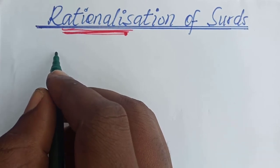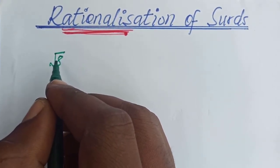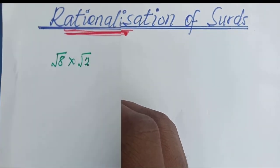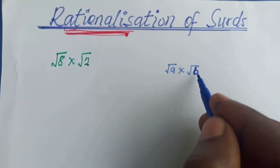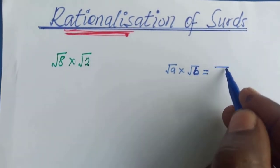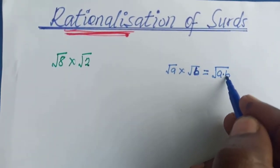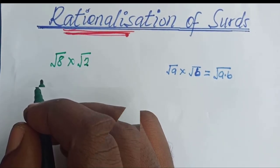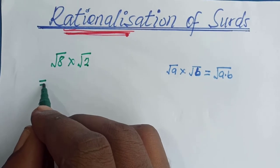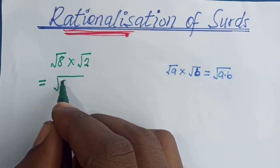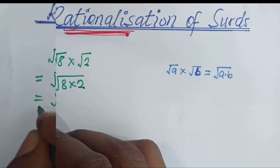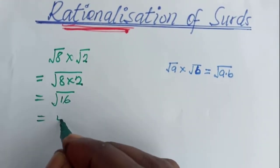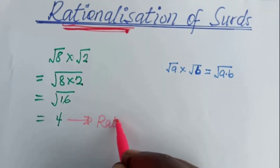Assuming we have the square root of 8 and we multiply it by the square root of 2. We know square root of a times square root of b is equal to square root of a times b — we know this from our previous lesson. So this gives us the square root of 8 times 2, which is equal to the square root of 16. And the square root of 16 gives us 4, which is a rational number.